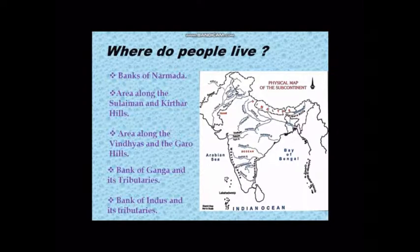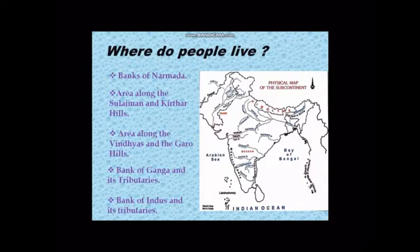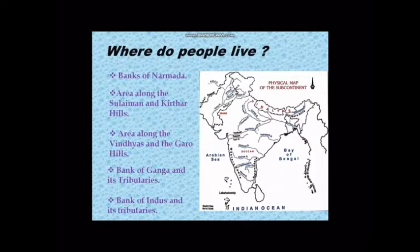The area along the Suleiman and Kirthar Hills is located to the north-west of the subcontinent. These are some of the places where people first started growing crops like wheat and barley around 8000 years ago. People also started rearing animals such as sheep, goat and cattle. The area along the Vindhyas and Garo Hills was also where agriculture developed.